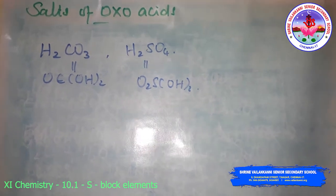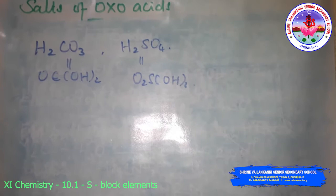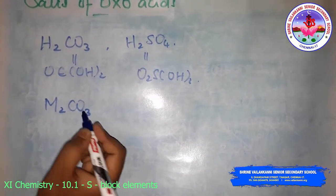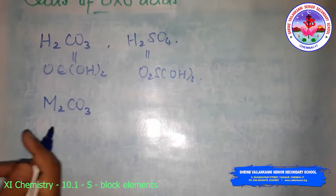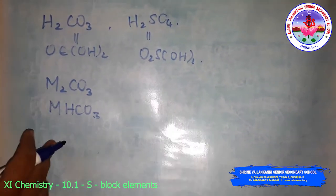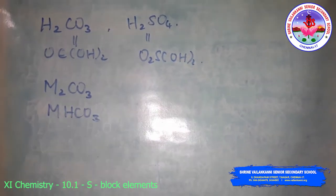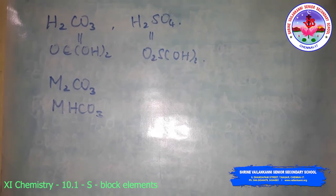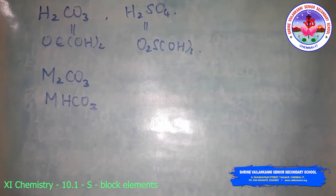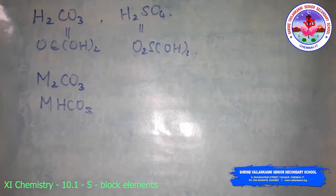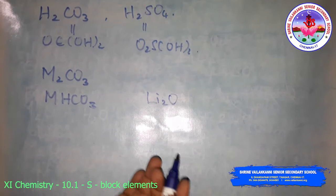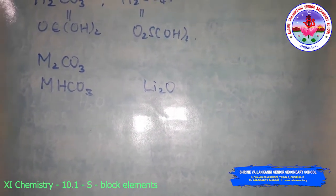The alkali metals form salts with all oxoacids. Usually they are soluble in water and thermally stable. The metal carbonates M2CO3 and hydrogen carbonates MHCO3 are also highly stable on heating. As the electropositive character increases down the group, the stability of the carbonate and hydrogen carbonate increases. However, lithium carbonate is not stable to heat because lithium, being very small, has high polarizing power over the large carbonate ion, leading to the formation of more stable lithium oxide and carbon dioxide. The hydrogen carbonate of lithium does not exist in the solid form.